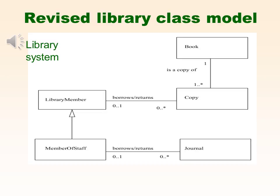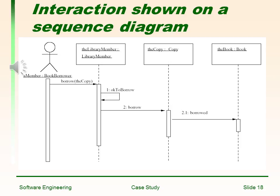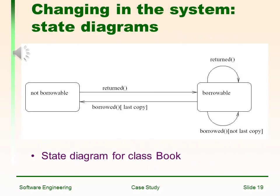Revised library class model. The library system will look like the figure shown below. The system in action: in UML, we can use interaction diagrams to show how messages are passed between the objects of the system to carry out some task. Interaction shown on a sequence diagram. Changing in the system: state diagram for the class Book.